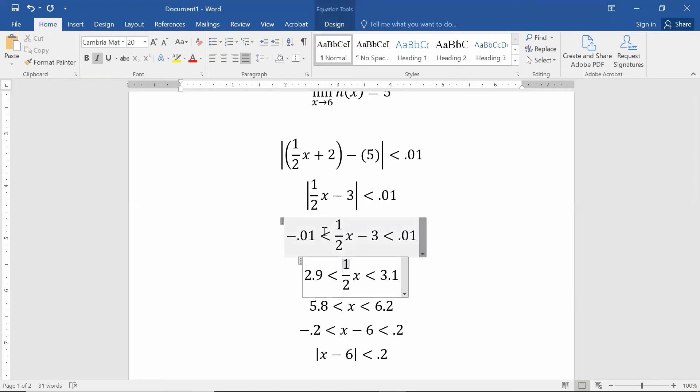Which means add 3 to both sides, 2.99 has to be less than 1/2x has to be less than 3.01. Again, I added 3 to both sides or all three sides, which is forcing when I multiply by 2...